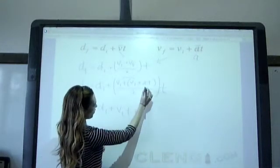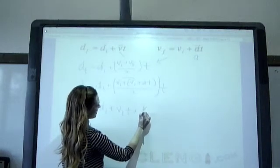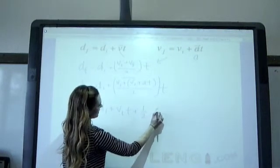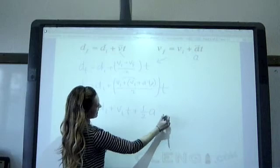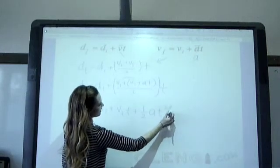And then we have at, so that's going to be one half times a, and then that t times t is going to end up with t squared.